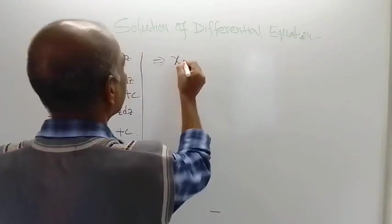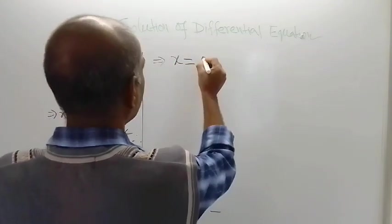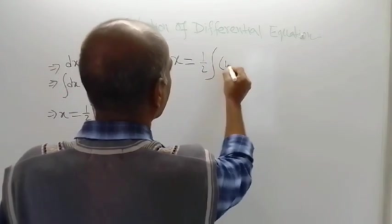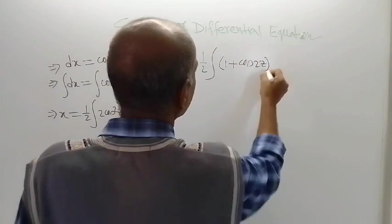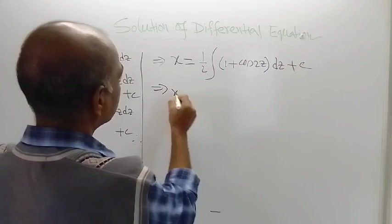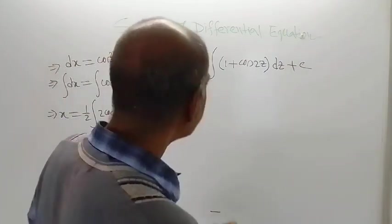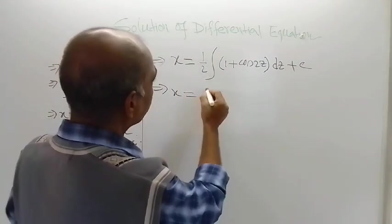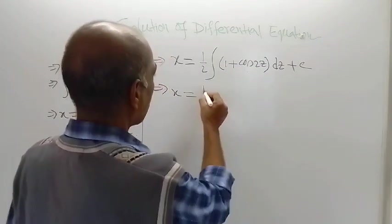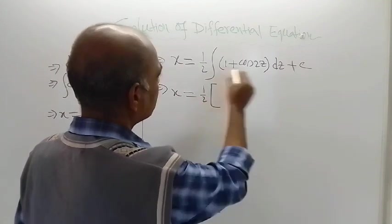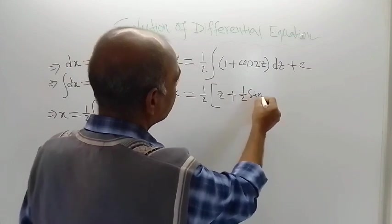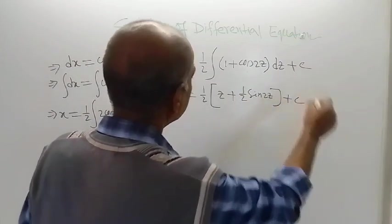So the left-hand side is x. The right-hand side is one half times the integral of (1 plus cos 2z) dz plus constant of integration c. On integration, for 1 we get z, and for cos 2z we get one half of sin 2z. Plus constant of integration c.